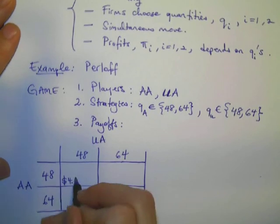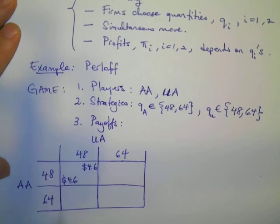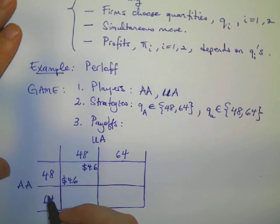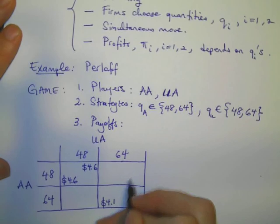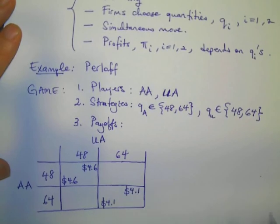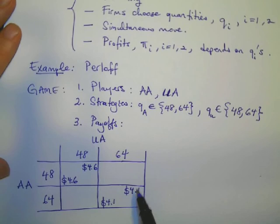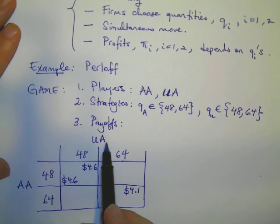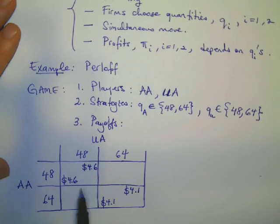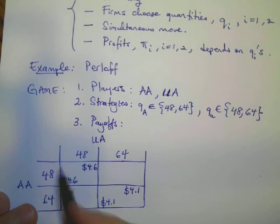Given these strategies, if both choose to fly a low number of passengers, they both end up earning 4.6 million dollars of quarterly profits. And if both choose to fly a high number of passengers, they both end up earning relatively lower profits. In these cells, the number on the bottom left belongs to American Airlines, and the number on the top right belongs to United Airlines. And similarly in this cell, in this cell, and in this cell again.